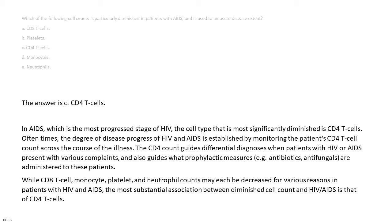Oftentimes, the degree of disease progress of HIV and AIDS is established by monitoring the patient's CD4 T cell count across the course of the illness. The CD4 count guides differential diagnosis when patients with HIV or AIDS present with various complaints, and also guides what prophylactic measures, for example antibiotics and antifungals, are administered to these patients.